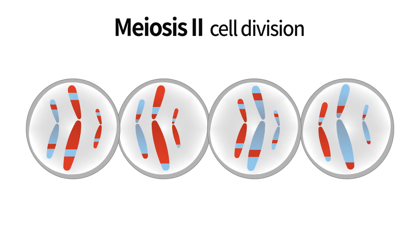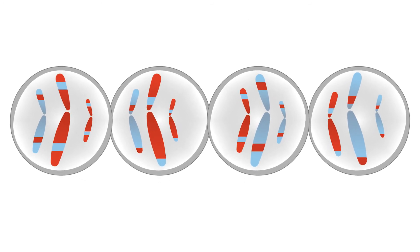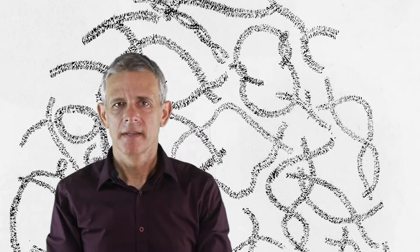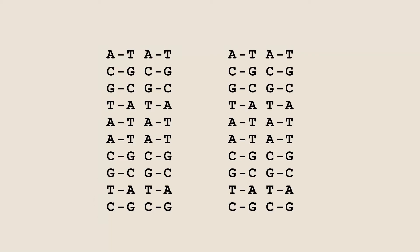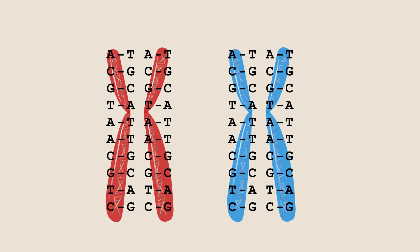Due to crossing over, chromosomes are not passed on from one generation to the next in their original form. This leads to virtually endless new combinations, so that no two gametes will ever be identical. Crossing over also means that evolution works on single genes and not on entire chromosomes.